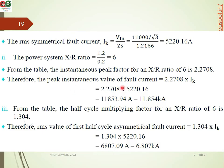The peak instantaneous value of the fault current equals 2.2708 × IK = 2.2708 × 5220.16 = 11,853.94 amperes. For X/R = 6, the half cycle multiplying factor from the table is 1.304.